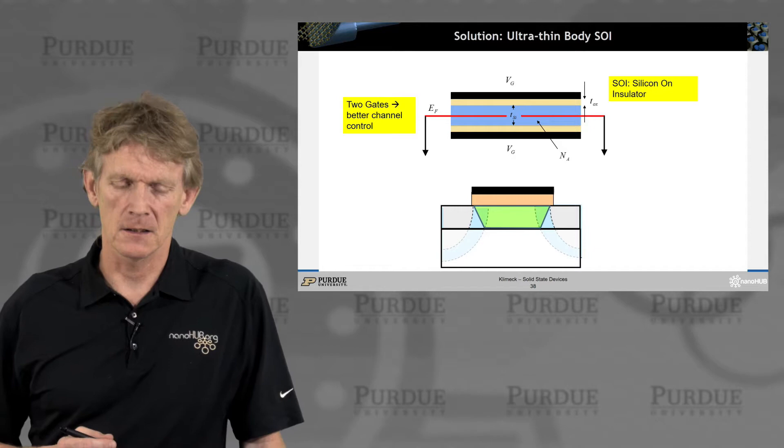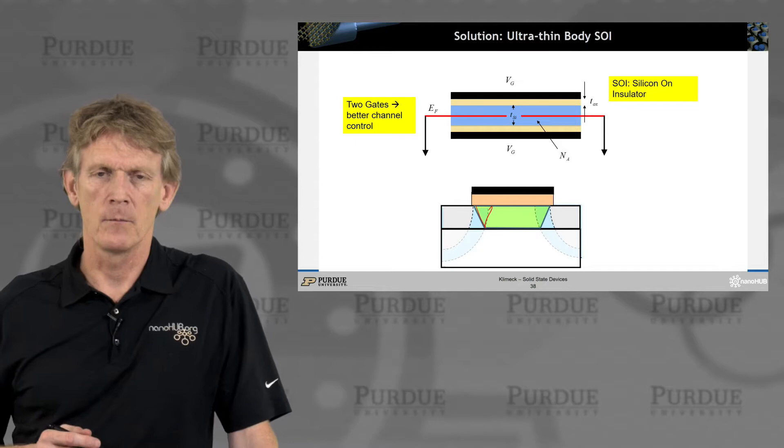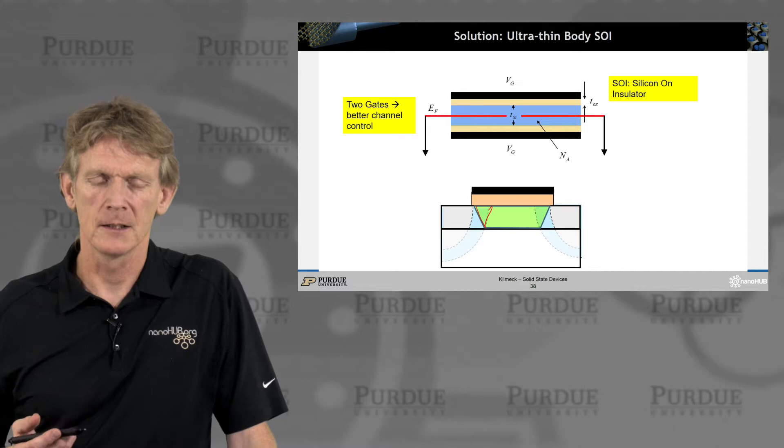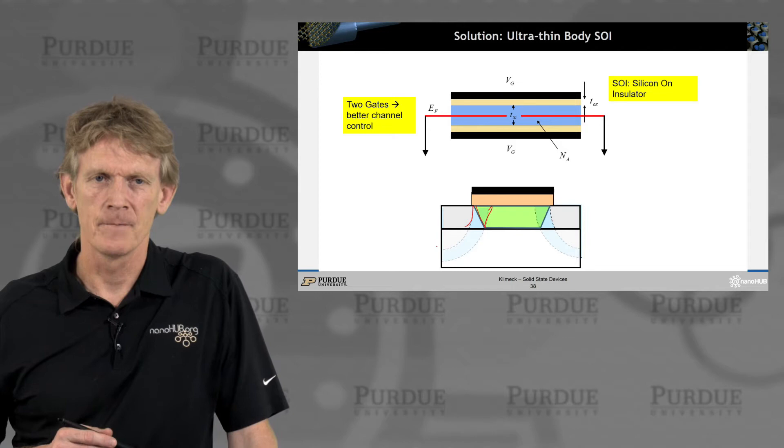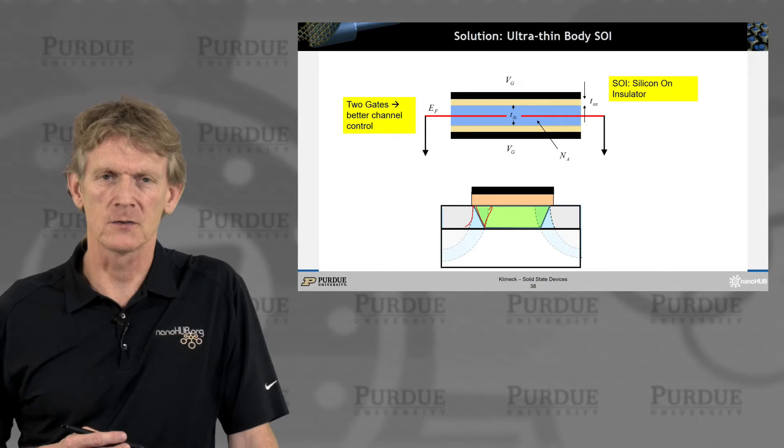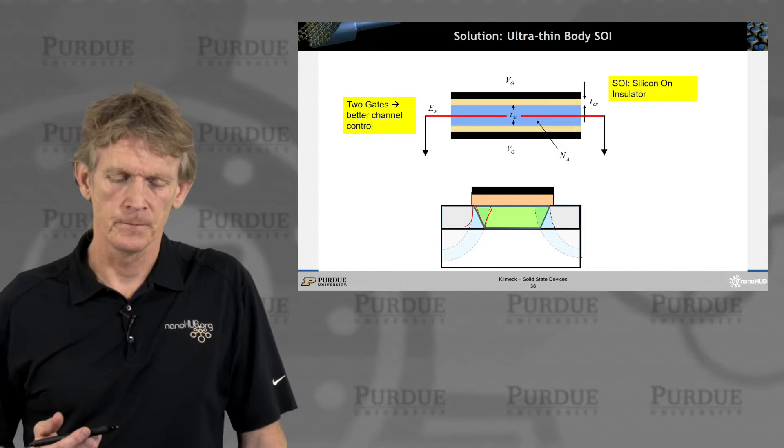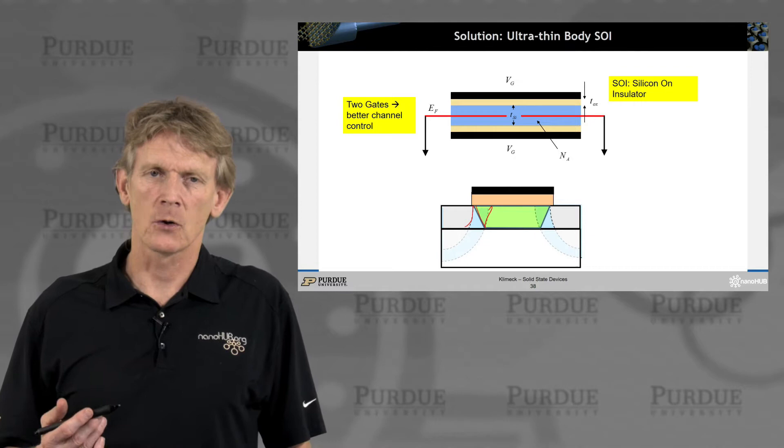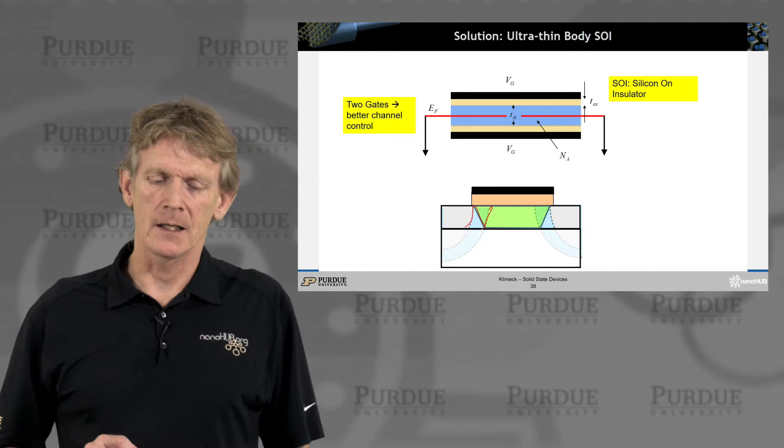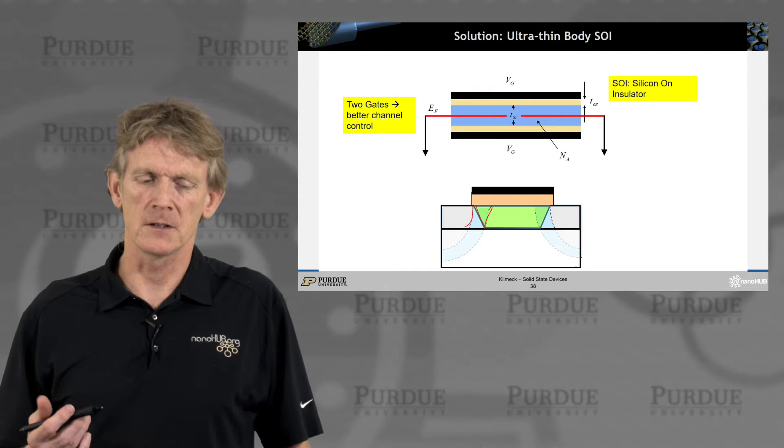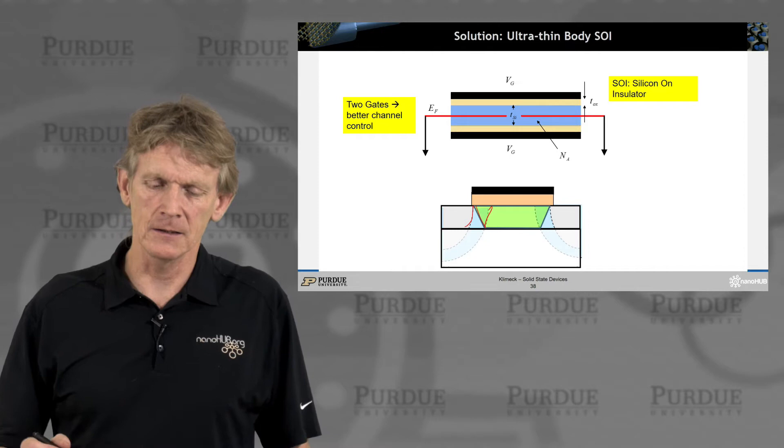You've just seen the sketch of how this triangle here can modify the effect of channel length, so to speak, that you have good control over because you have a competition between the source depletion region and the source charges in the p-n junction on the source gate side. And if you include two gates, you sort of add up the electrostatic field lines and you have better control. So you effectively have impinging electric fields from both sides of the channel, and that gives you better control of the channel.